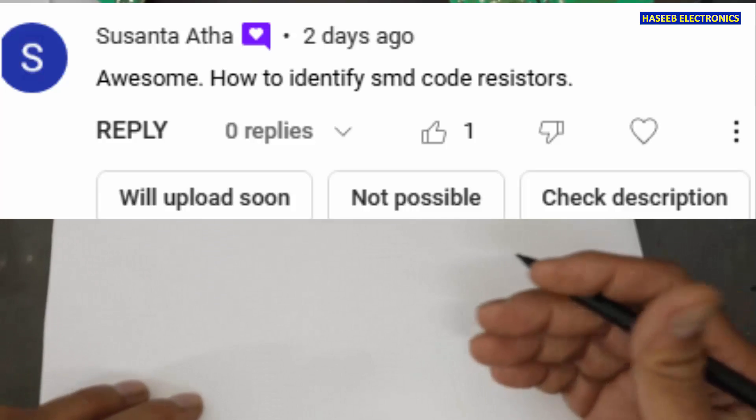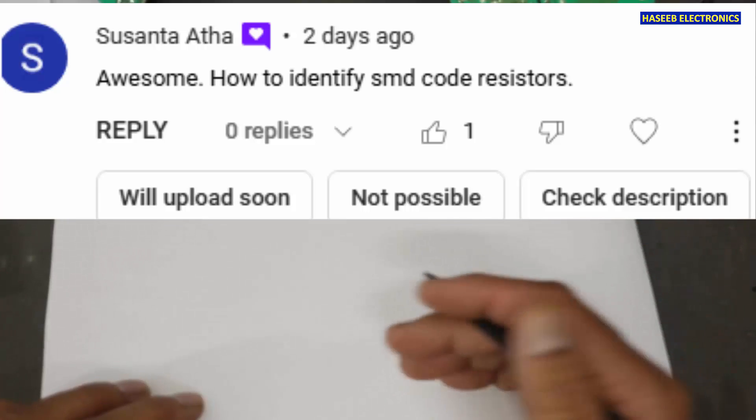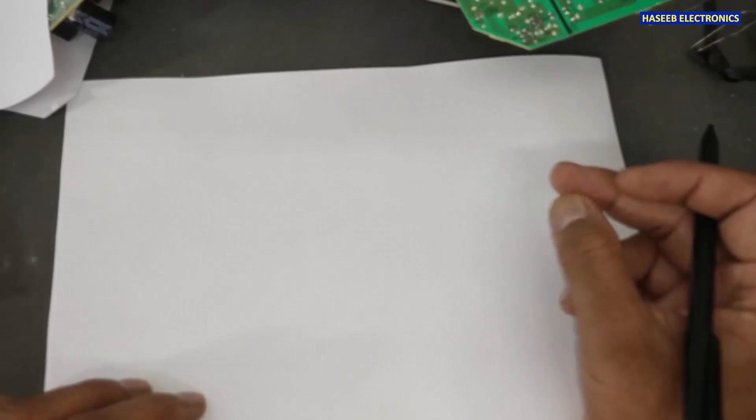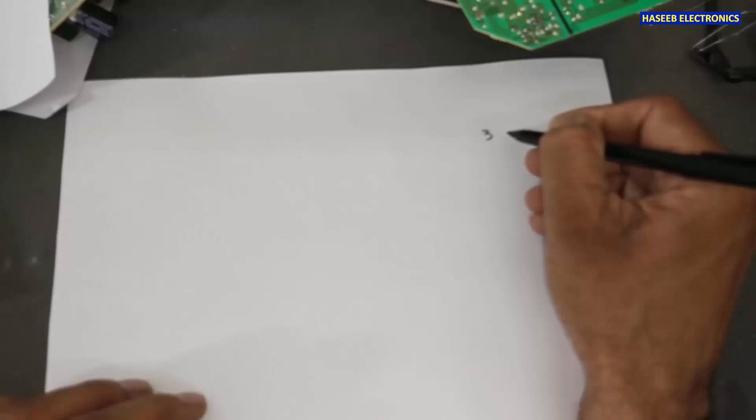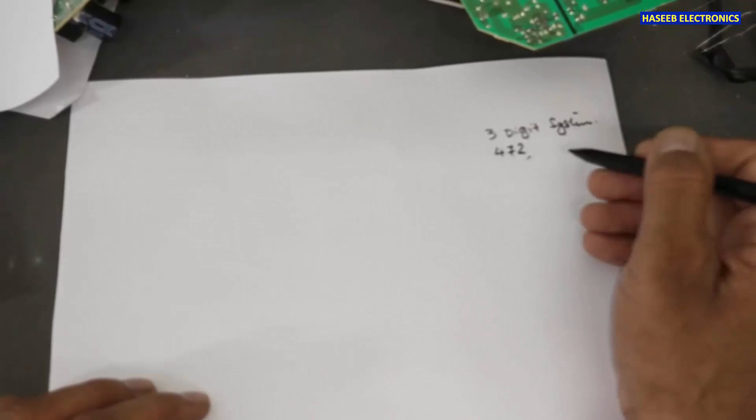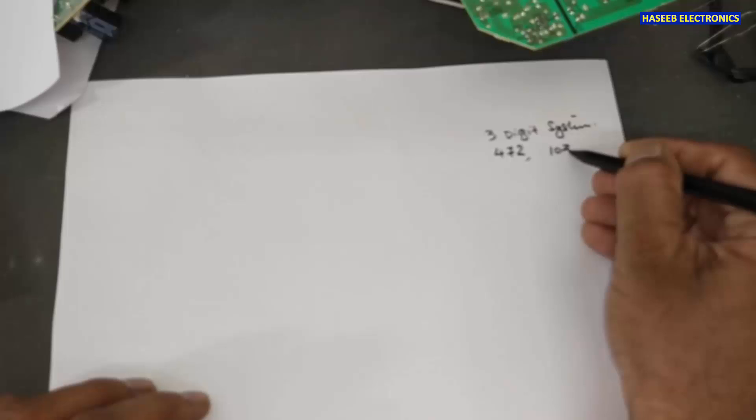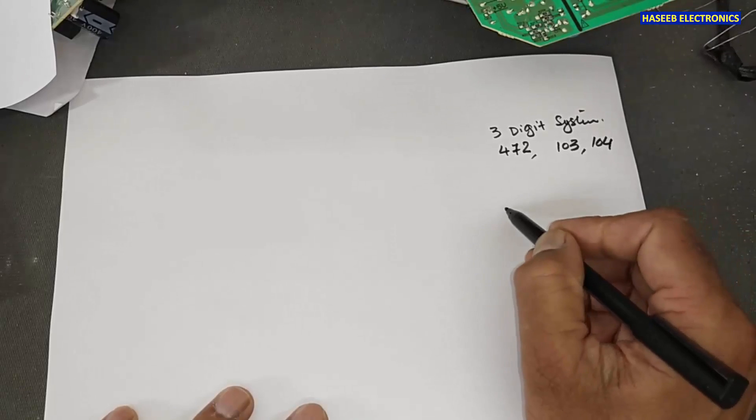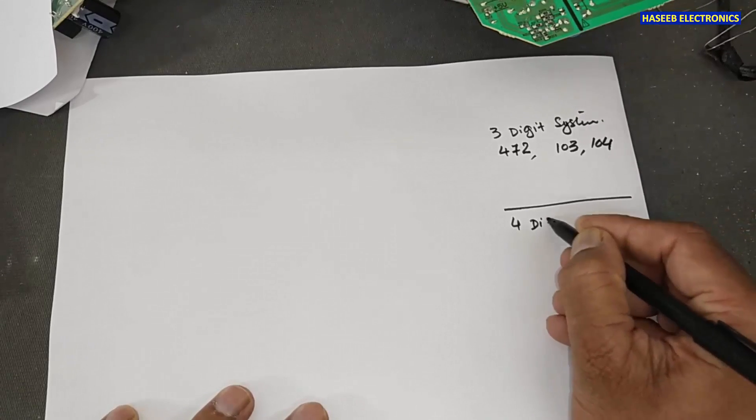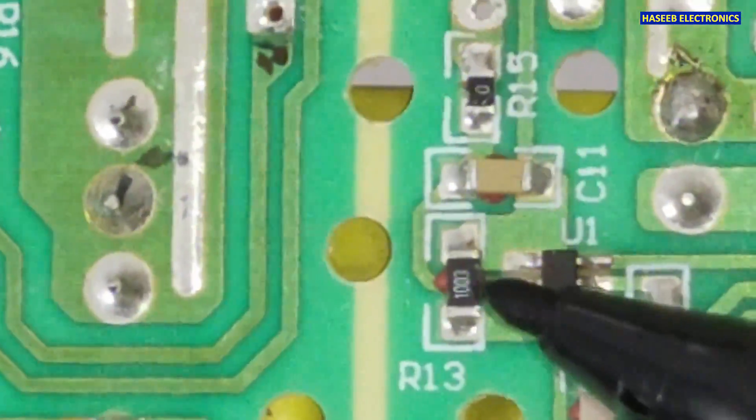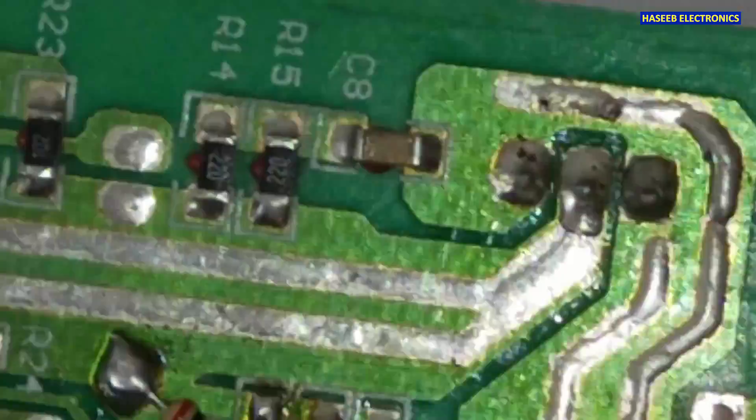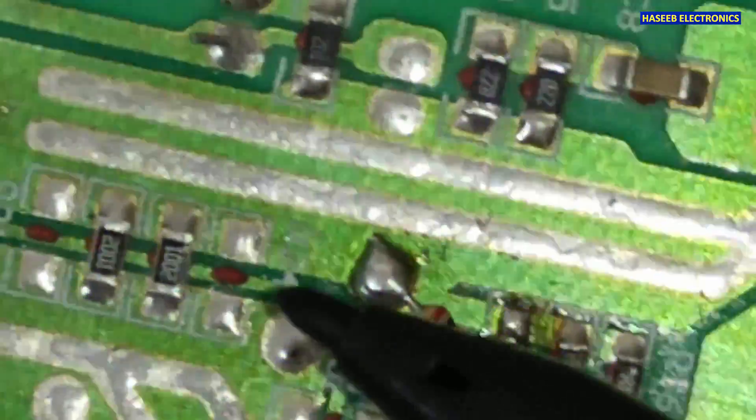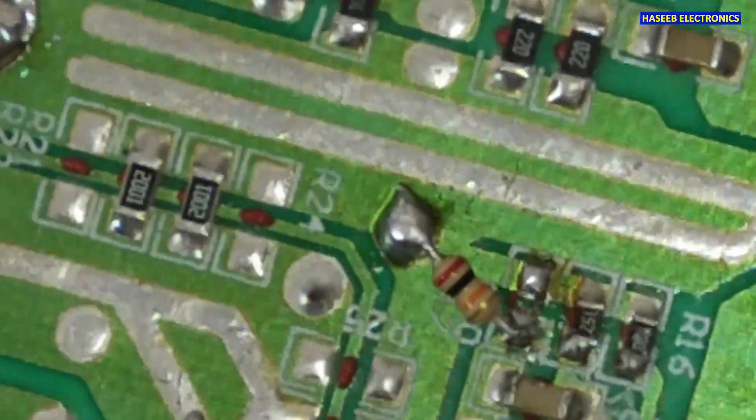He asked me that how we can know the value of the SMD resistor. In the SMD resistor marking system, there are different methods. The one that is three-digit system like 472, 103, 104. Then there is other system that is four-digit system. As we checked here, here is 1003. 220, it is three-digit system. 1002, it is four-digit system.